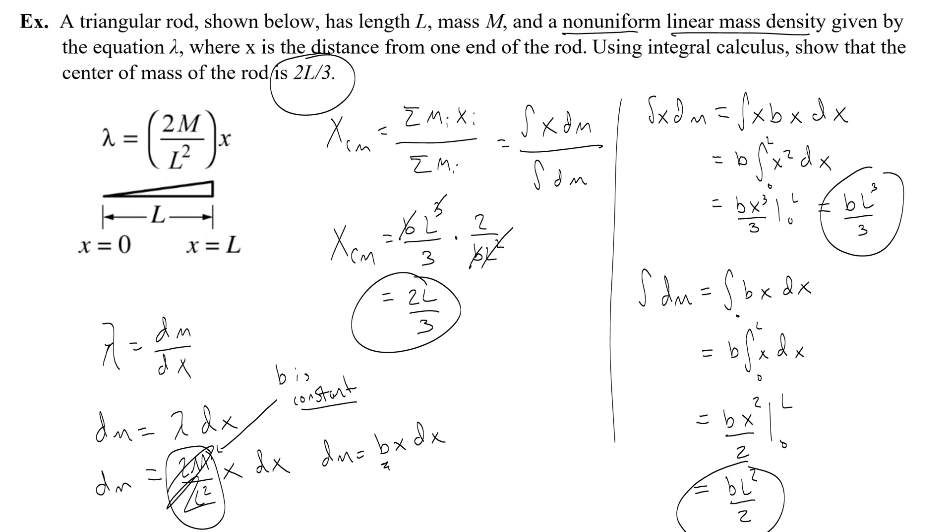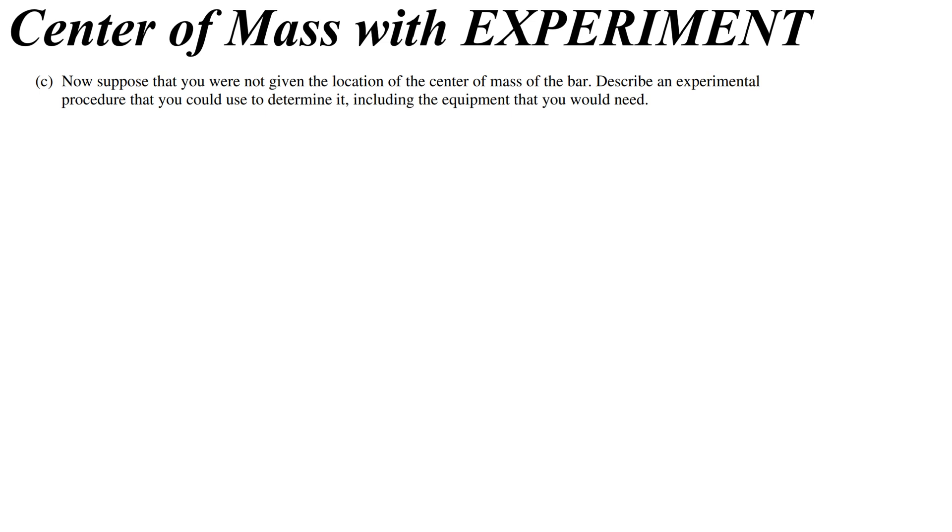And it's stupidly simple. Here's how they would write this. Suppose that you are not given the location of the center of mass of the bar. Describe an experimental procedure that you could use to determine it, including the equipment that you would need.